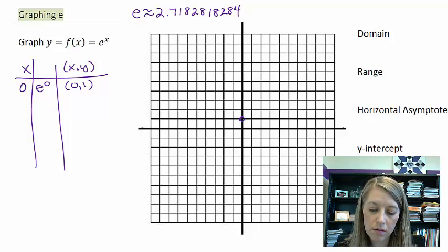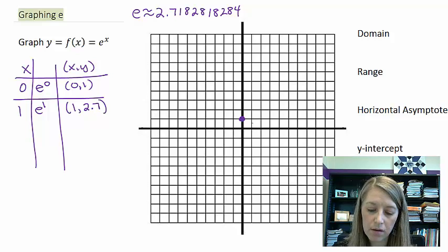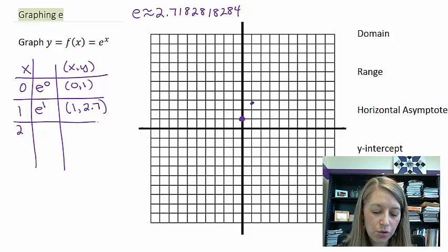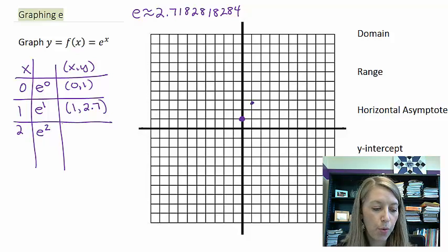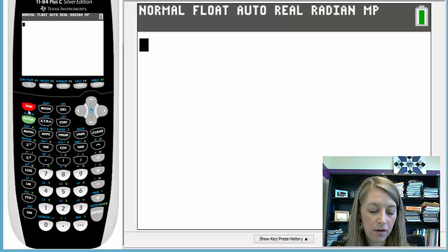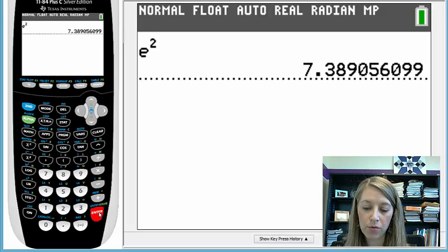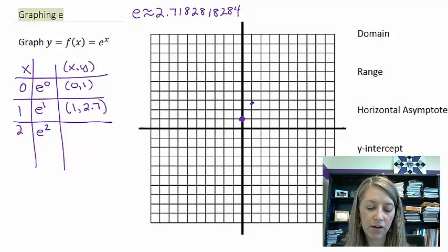And so my ordered pair would be zero comma one. If I were to plug in one to this, e to the first power is pretty much what e is, and so that's approximately 2.7. If I were to plug in two to this, that would give me e squared, so 2.7 squared. You could very easily type this in your calculator. e to the second is 7.38 or approximately 7.4.